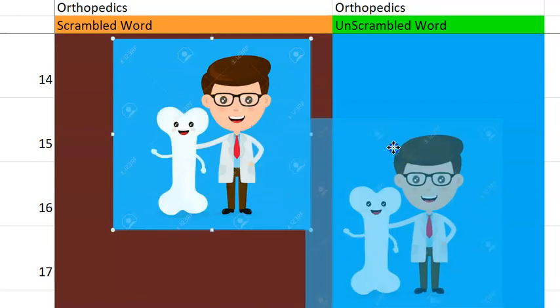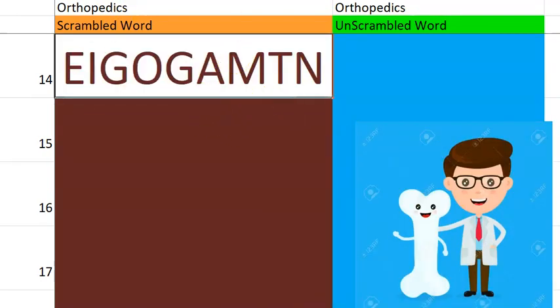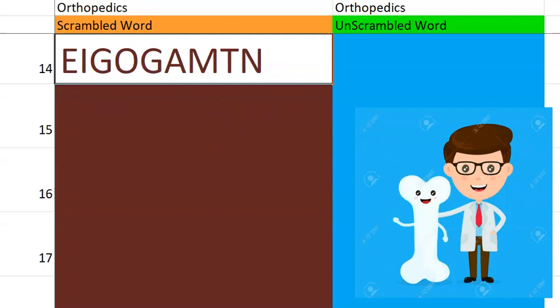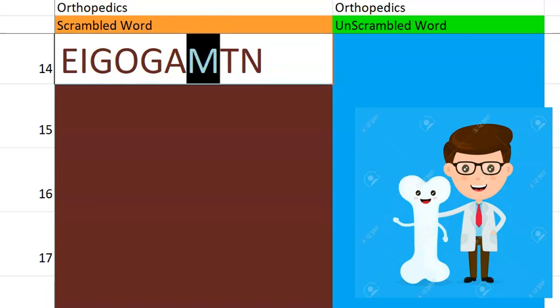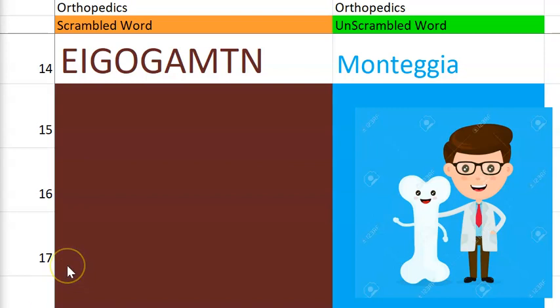Let's go to the fourteenth one. What is this? It starts with M. It's the name of a fracture, a fracture on an outstretched hand. This is Monteggia. Monteggia fracture — there will be fracture of the proximal third of the ulna with dislocation of the proximal head of the radius. This is a proximal fracture basically to your elbow.